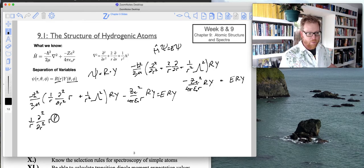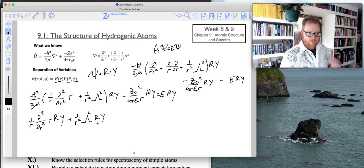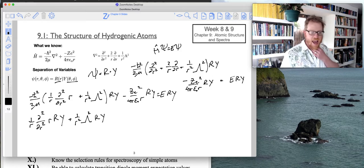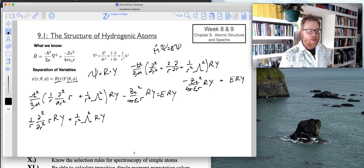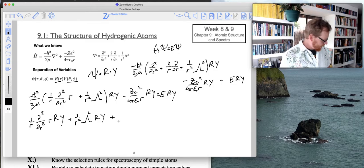So now I'm going to write that as 1 over r partial of r squared times r, and then distribute that through big r times y. And then now that's plus 1 over r squared times the Legendre squared times r y. And then now, because I multiplied through by negative 2 mu over h bar squared, this changes my sign right here.